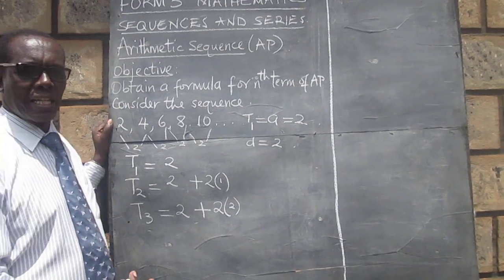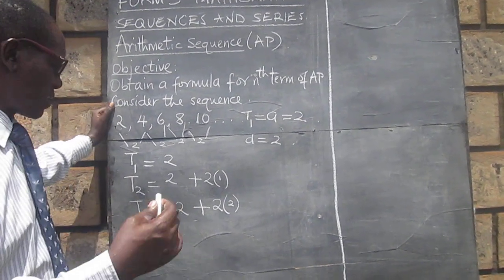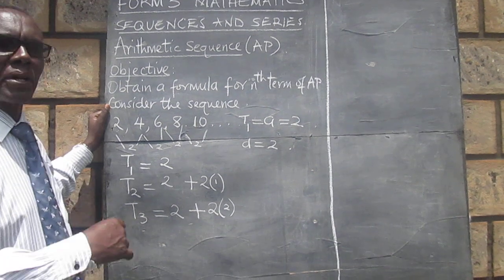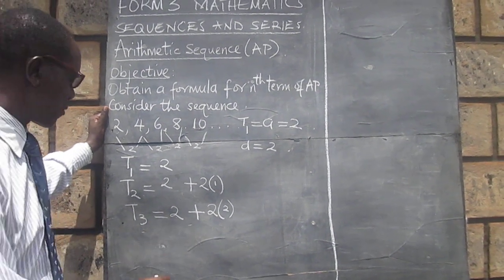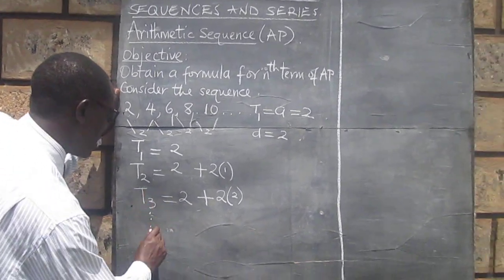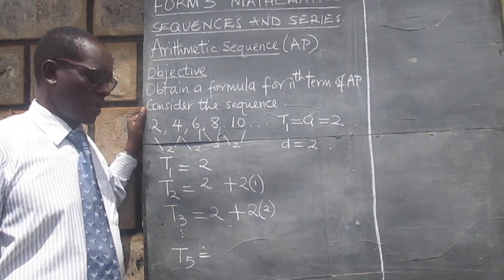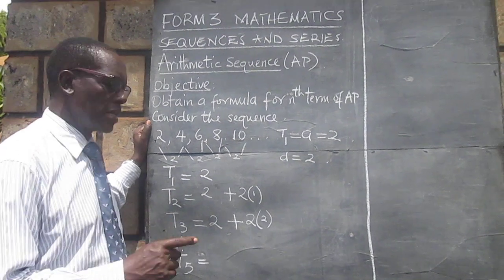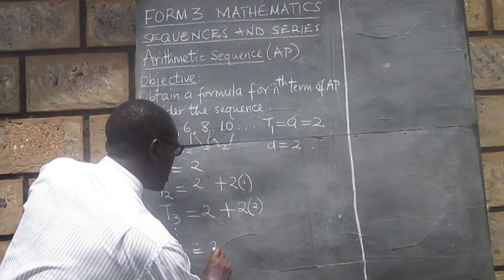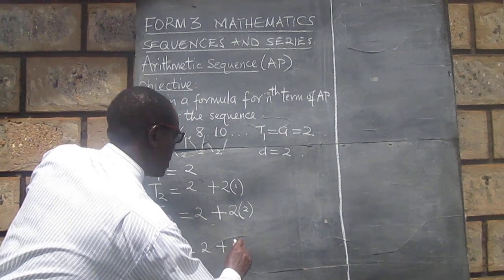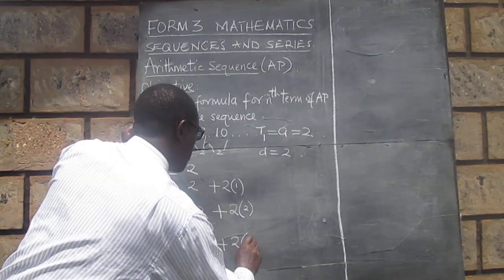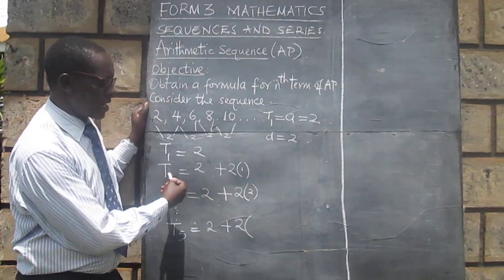We can go on like that, and maybe it's possible now to predict what the fifth term will be. We can go on like this and predict the fifth term. I hope you can see that it will be 2 plus 2 times. Now, looking at these earlier ones,